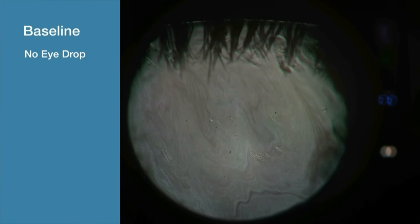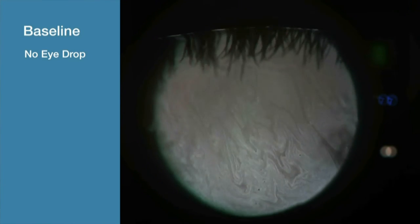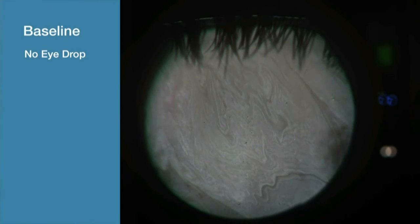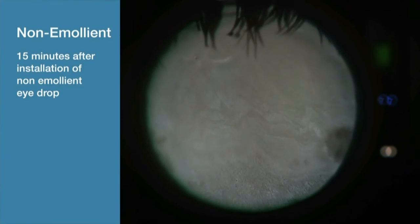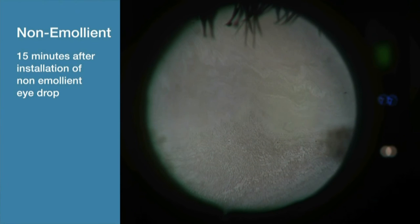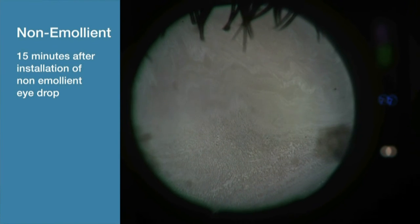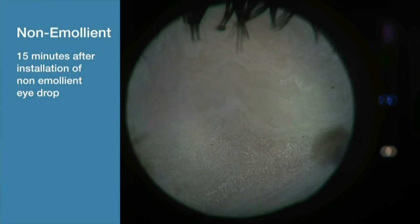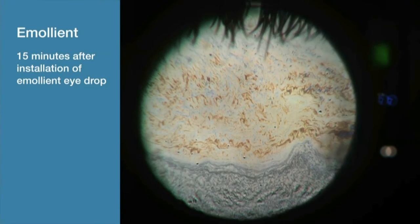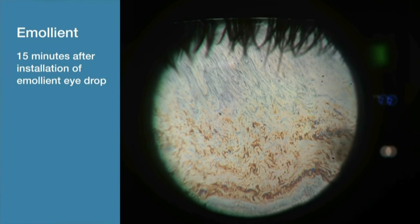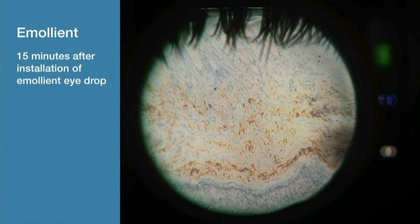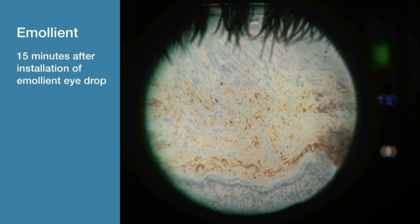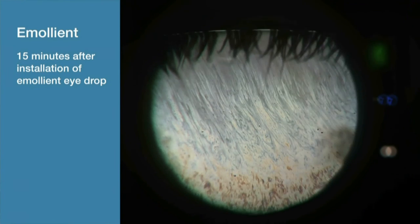This is a video of the lipid layer thickness of an eye at baseline before any eyedrops are instilled. This video shows the lipid layer thickness 15 minutes after a control non-emollient eyedrop was used. Note the similarity in appearance to the baseline video. The final video was taken 15 minutes after instillation of the lipid or emollient containing eyedrop. The vibrant colors you see correspond to greater lipid layer thickness.